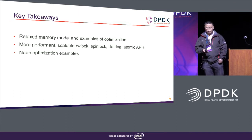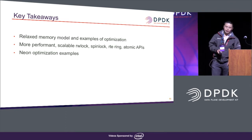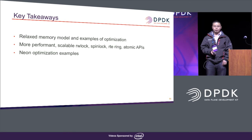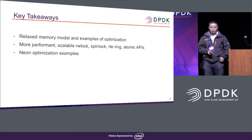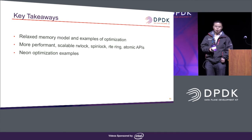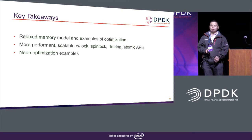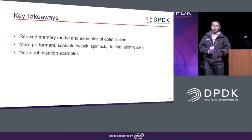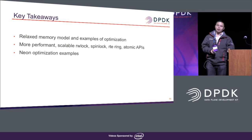To wrap up, the key takeaways are: first, the relaxed memory model and examples of optimizations — you can find relevant patches in the Git log history. Second, all the new instructions are supported to bring more performance and scalability to read-write lock, spin lock, rte_ring, and rte_hash. These performance gains can help these implementations scale up much better than before on larger systems.